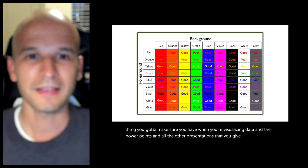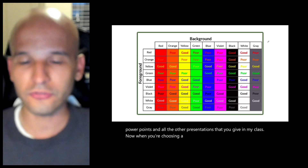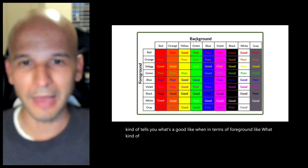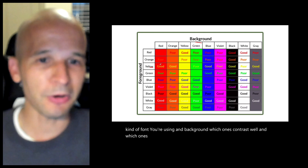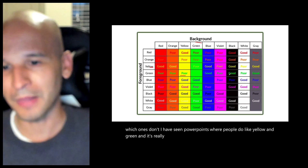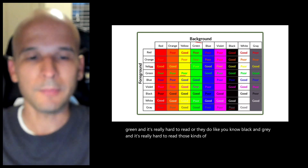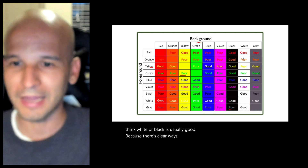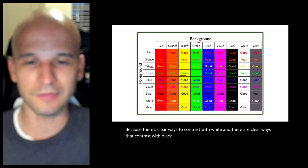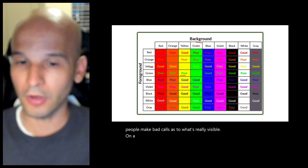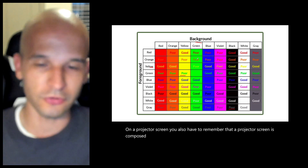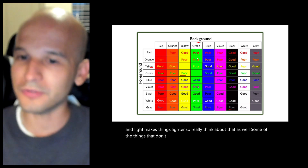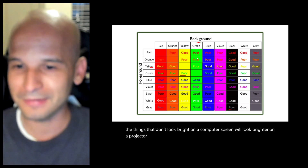When choosing a background, the big thing is to pick one with good contrast. This chart shows which foreground and background combinations contrast well and which don't. I've seen PowerPoints with yellow and green, or black and gray — really hard to read. Make sure your foreground and background contrast clearly with each other. White or black is usually good because there are clear ways to contrast with each. Also remember that a projector screen is composed of light, which makes things appear lighter — so colors that look fine on your computer screen may appear brighter when projected.